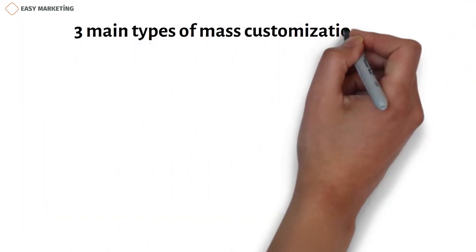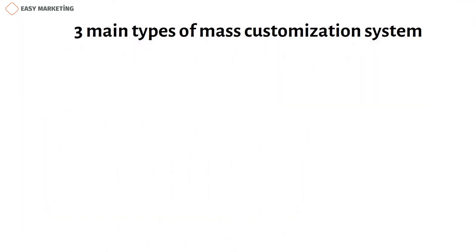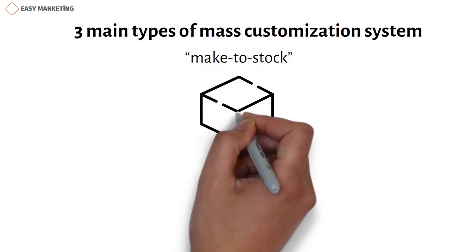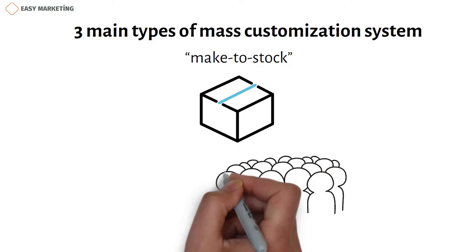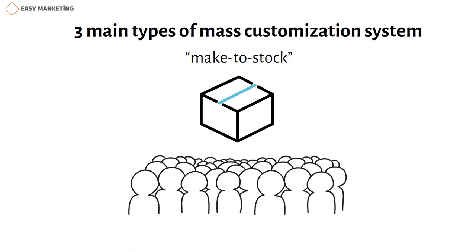Now let's talk about the three main types of mass customization systems. The first is called make-to-stock. Here, the firm aims to meet the special wishes of a large number of customers by producing a single product. For example, the same smartphone sold to millions of people can be customized by each buyer.